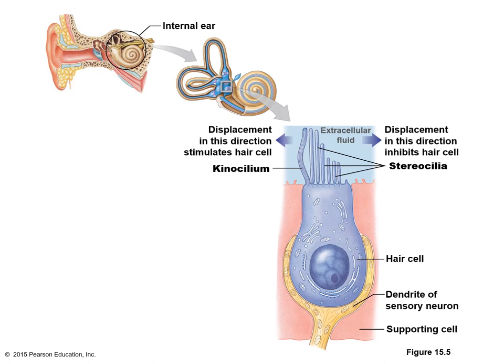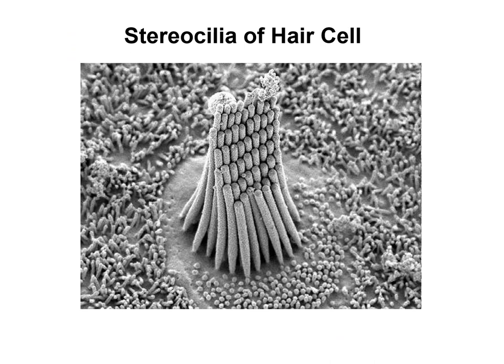Here we can see a diagram of a hair cell in intimate contact with the dendrite of a sensory neuron. The hairs of the hair cell are surrounded by fluid inside the inner ear. This extracellular fluid moves in given directions, causing movement of the stereocilia and in some cases the kinocilium. This movement is transmitted to the dendrite of the sensory neuron and will be interpreted as movement or sound. An electron microscope picture shows the stereocilia extending up from the supporting cells.